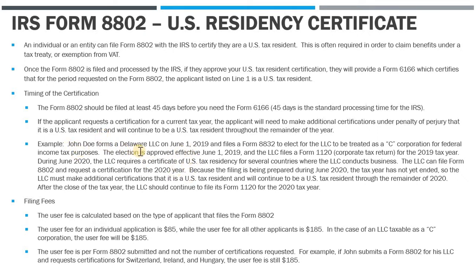John Doe forms a Delaware LLC in June 2019 and then files Form 8832 to elect for the LLC to be taxed as a C-Corp. By default, a single-member LLC is a disregarded entity, so John files the 8832 to make it a C-Corp for federal tax purposes. C-corporations are US tax residents under federal tax rules. The election is approved effective June 1, 2019, and the LLC files its Form 1120 corporate return for the 2019 tax year.